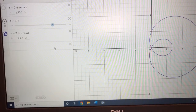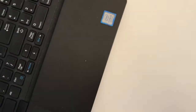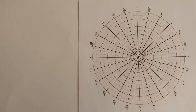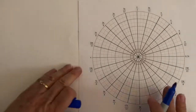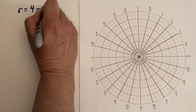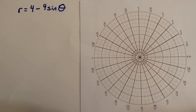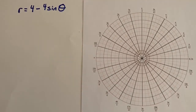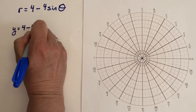Now we know what we're looking for — that type of graph. Let's graph a few by hand. I'm going to move my computer away and work on paper. Let's get our polar grid ready and start with this particular equation: r equals 4 minus 4 sine theta. I'm going to graph the rectangular version, y equals 4 minus 4 sine x, first.